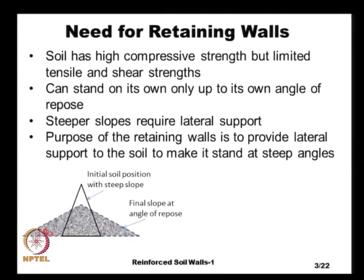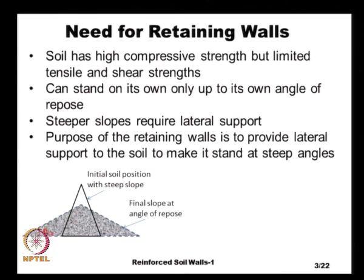Let us look at the need for retaining walls. If we apply a pure compressive stress on soil, it can take as much as you apply. But if you apply a normal compressive stress with a free edge on the sides, it can deform because of Poisson's effects, and in the process of deformation it will undergo some tensile stresses and shear stresses. Unfortunately, although soil has very high compressive strength, it has very limited tensile strength and shear strength, and because of that it will undergo failure.